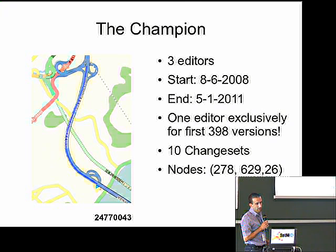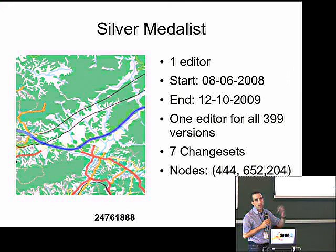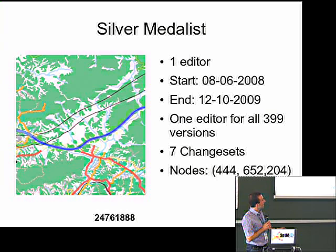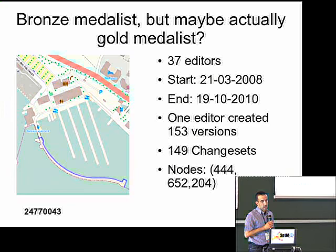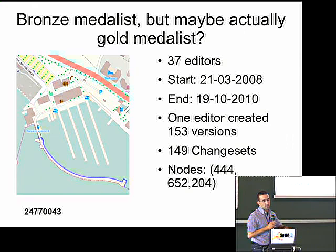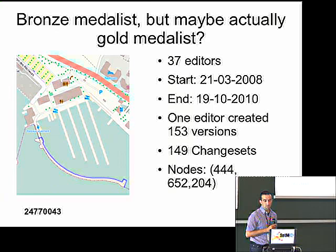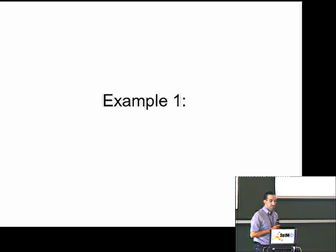The triangle shows the number of nodes — starting at maximum and ending with the current count. The silver medalist has one editor with seven changesets; a changeset can be open for 24 hours, so maximum this would represent about a week's work. What I'm saying about the third one — it really should be the gold medalist — is that there are 37 editors to this feature. Looking at the history, this has been part of Lake Geneva, with a lot of breaking of the polygon. One editor did create half of the versions, and there are a lot of changesets — a lot of work going on.